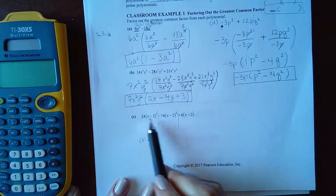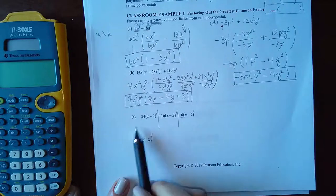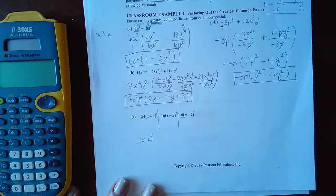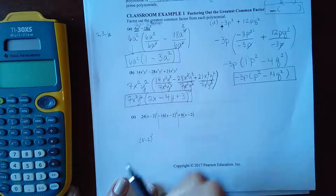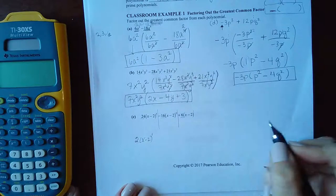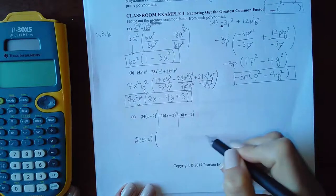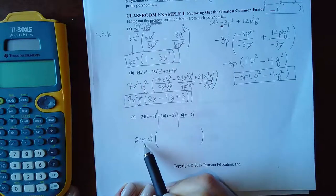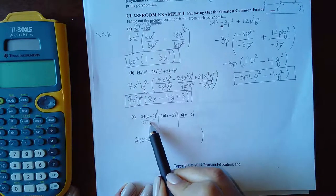What about the coefficients in the front? It's positive. So my GCF will be positive in front. But all of them can be divided by two. So I can also take out a two.